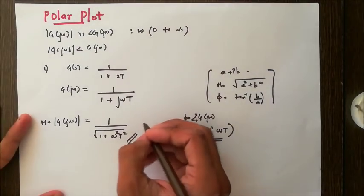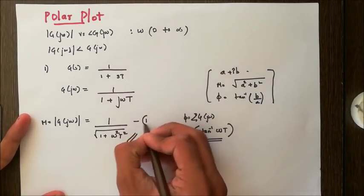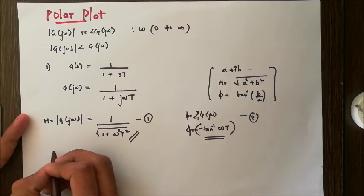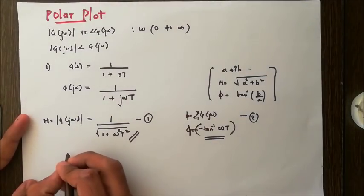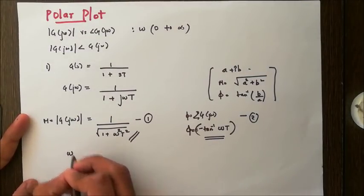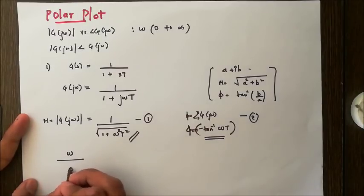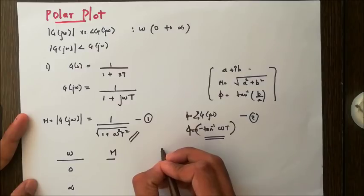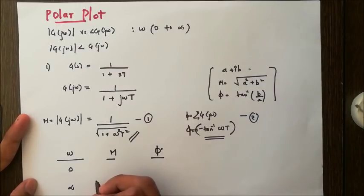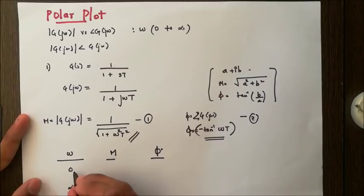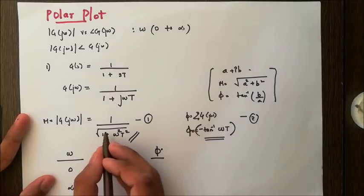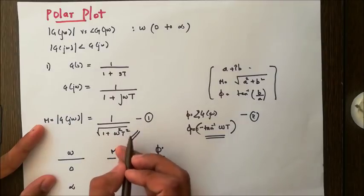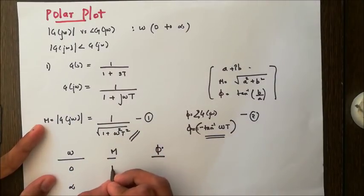Now we have the equations for magnitude and phase — call them equation 1 and equation 2. The next step is to vary omega from 0 to infinity and calculate the corresponding values of magnitude and phase. If I substitute ω = 0, the magnitude is 1 / √(1 + 0) = 1.